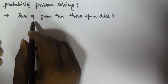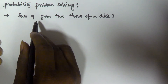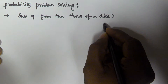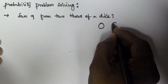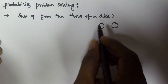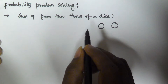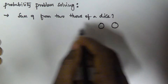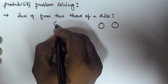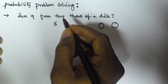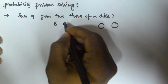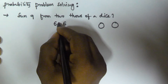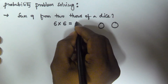The probability of getting 9 from 2 throws of a dice. Whenever we are throwing 2 dice — this is the first one and this is the second one — how many elements is the sample space going to contain? In the first case there is a possibility of getting 6 outcomes, and in the second case also 6 outcomes, so the total number of outcomes is 6 into 6, which is 36.